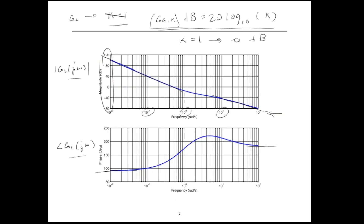Let's go up to the previous example and pick off the gain crossover frequency and phase crossover frequency. Here's the 0 dB line — the gain crossover frequency is roughly 0.5 radians per second. For the phase crossover frequency, that's interesting: this plot never crosses negative 180 degrees, so we really don't have a phase crossover frequency. That's okay — it still tells us quite a bit about the behavior of the closed loop system.